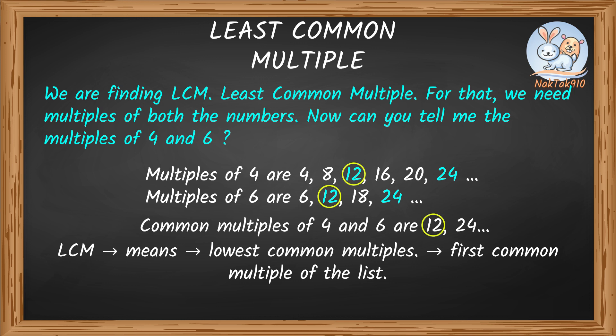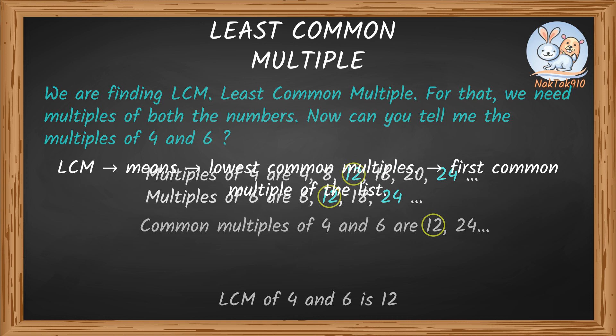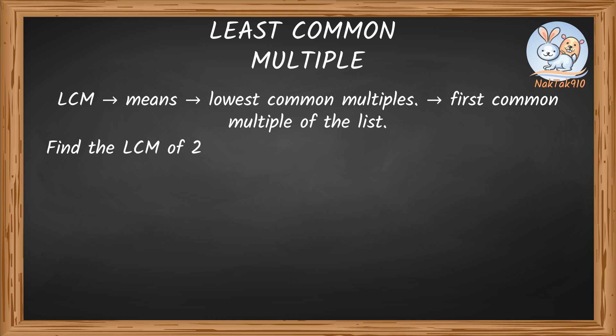So in this case, 12 is the first or the least common multiple of 4 and 6. That means LCM of 4 and 6 is 12. I think I kind of got that. Try one yourself. Find the LCM of 2 and 5.